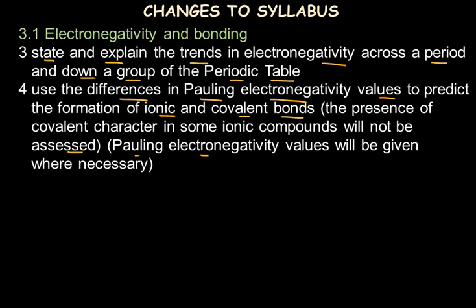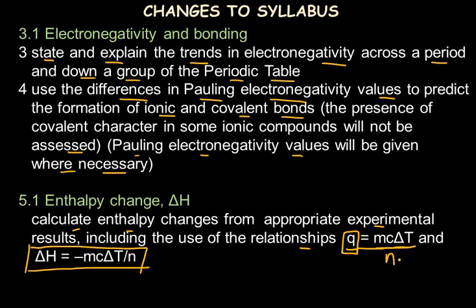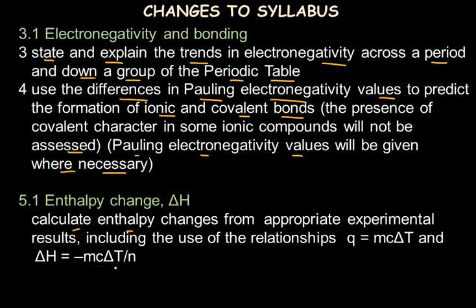Pauling's electronegativity values will be given wherever necessary. The next change is in the topic of enthalpy change: to calculate the enthalpy change from appropriate experimental results, including the use of the relationship q = mcΔT. This we had already done — we were indirectly calculating ΔH earlier by dividing heat energy ΔQ by the number of moles to find energy change in kilojoules per mole. Now it is officially added to the syllabus, so nothing new is added but it is now formally included.